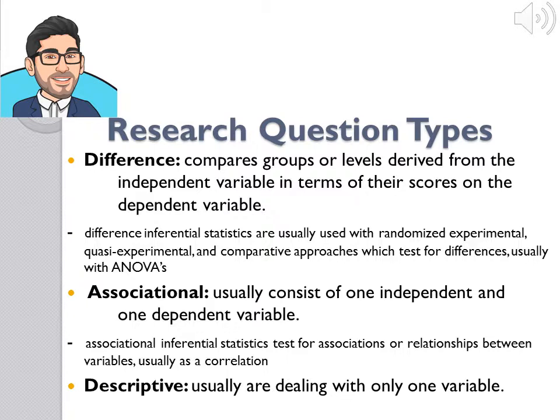We can divide research questions into three different types. With difference research questions, we compare groups or levels derived from the independent variable in terms of their scores on the dependent variable. These are usually used with randomized experimental, quasi-experimental, and comparative approaches which test for differences, usually with ANOVAs. With associational research questions, we usually consist of one independent and one dependent variable. Associational inferential statistics test for associations or relationships, also known as correlations.